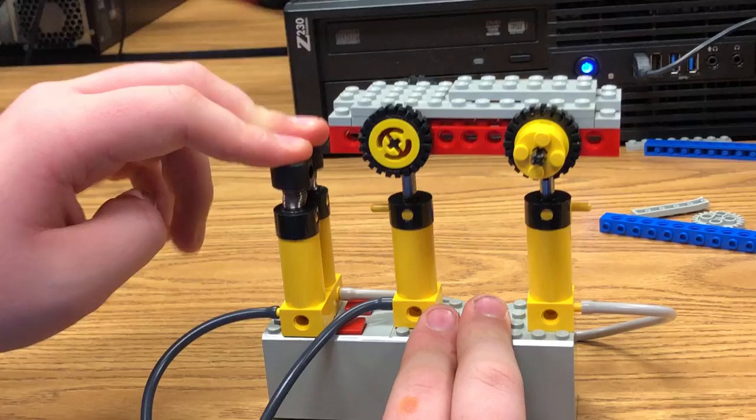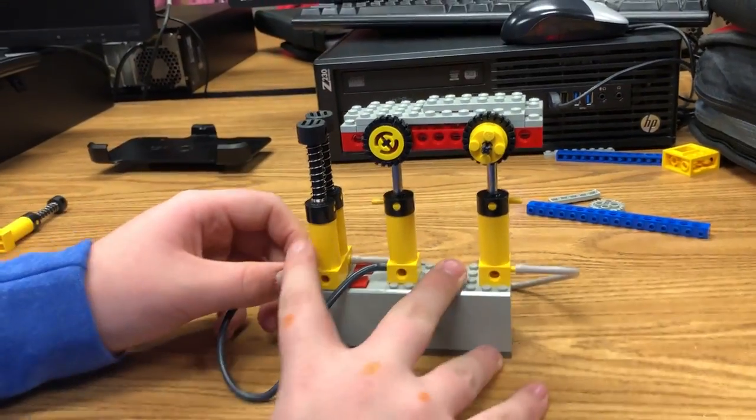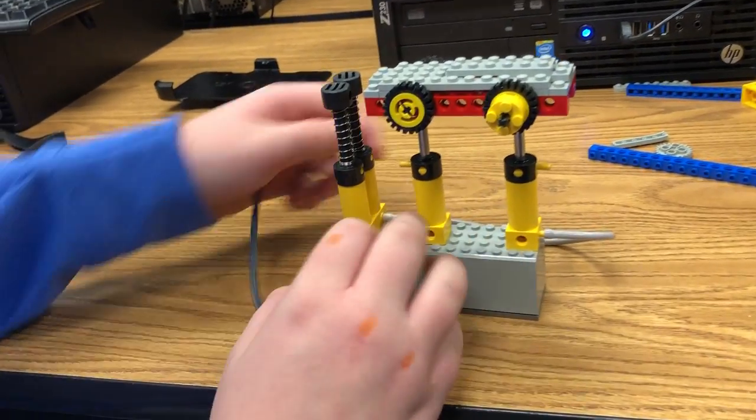Then you push these two buttons and it should go up like that. And the only way we know how to relieve the pressure is just by taking off the tubes.